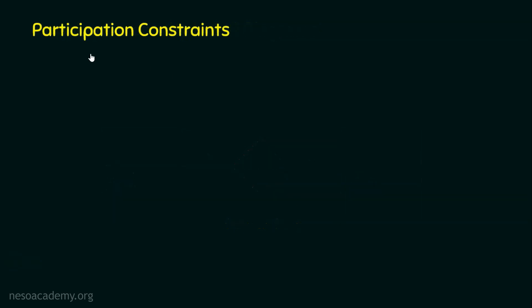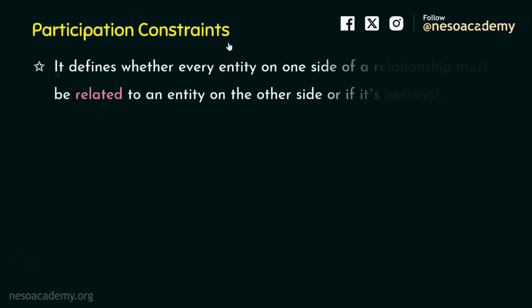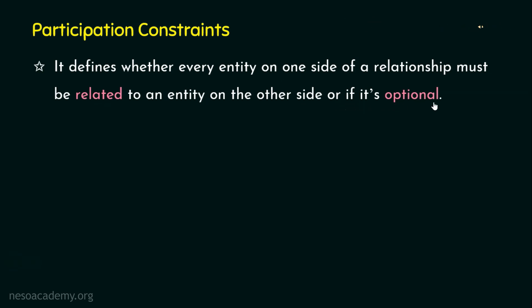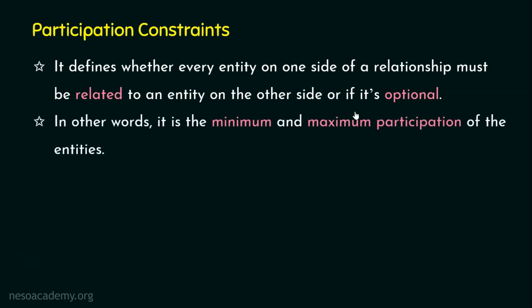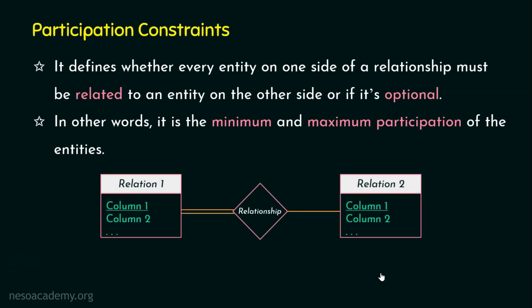What is a participation constraint? A participation constraint defines whether every entity on one side of a relationship must be related to an entity on the other side, or if it is optional. In other words, it describes the minimum and maximum participation of the entities.